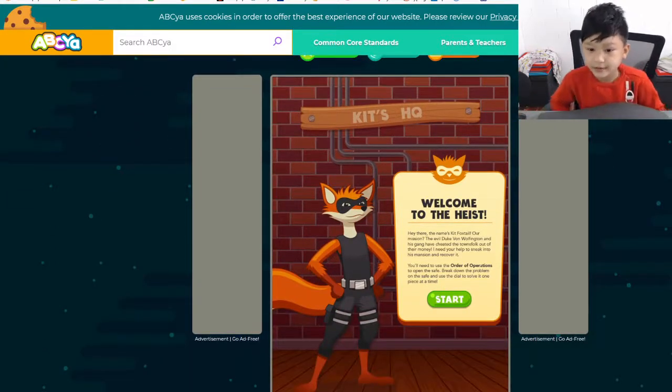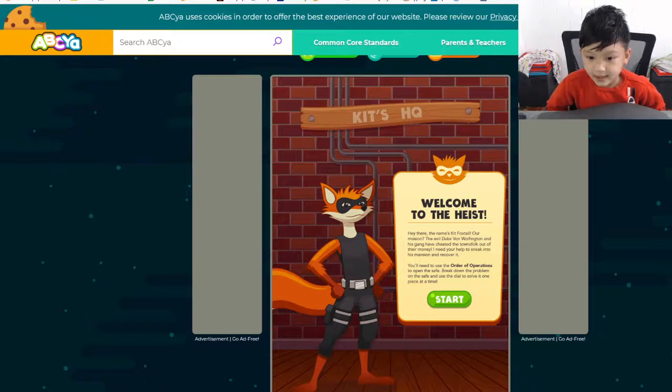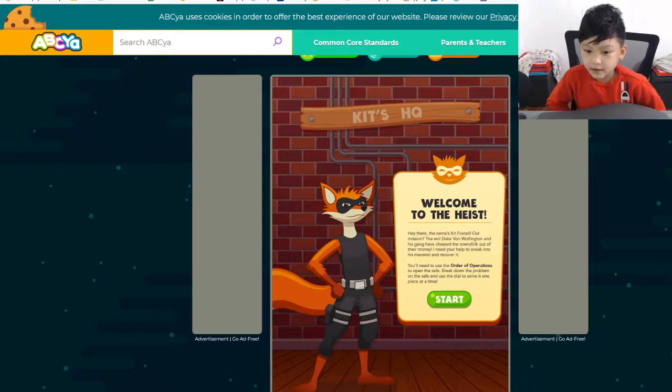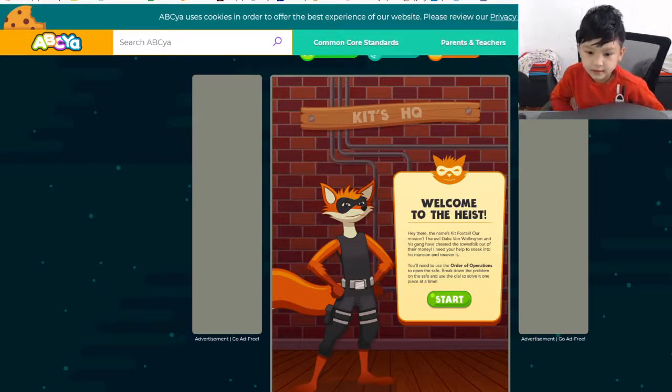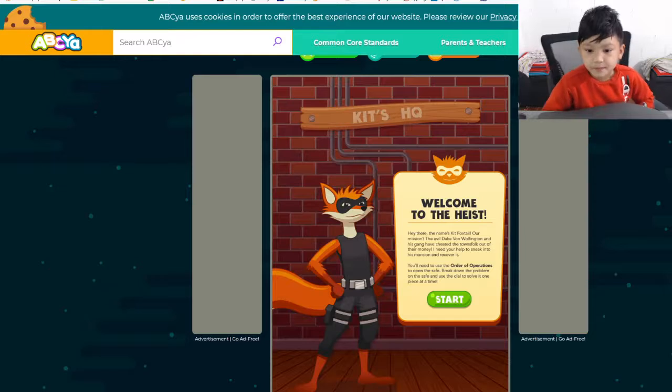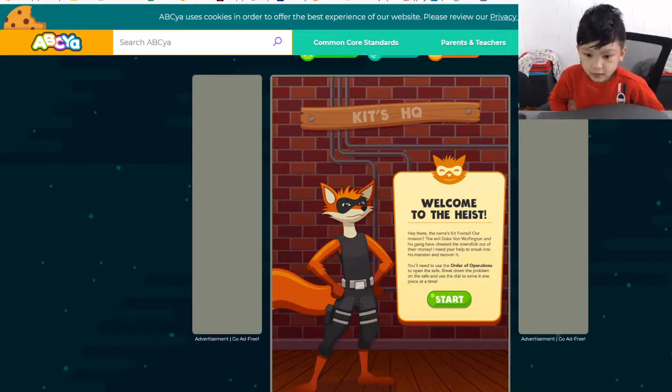It says, Welcome to the heist. Hey there, the name is Kit Foxdale. Our mission, the evil Duke VanWolfington and his gang have cheated the town folk out of their money. I need your help to sneak into his mansion and recover it. You will need to use the order of operations to open the safe.